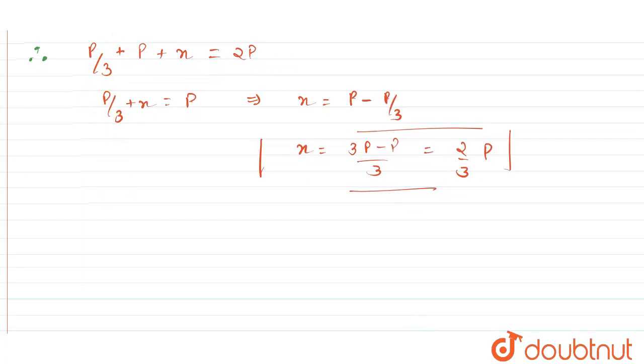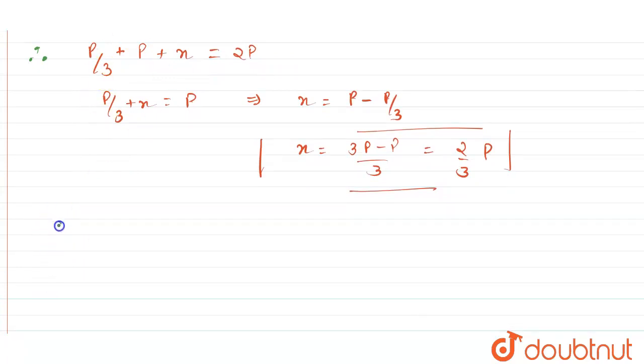So you get the value for pressure of ammonia is equal to 2 by 3 P. Now you can find the equilibrium constant in terms of pressure. Therefore, you can say KP will be equal to partial pressure of ammonia raised to 2 divided by partial pressure of hydrogen raised to 3 and partial pressure of nitrogen raised to 1.